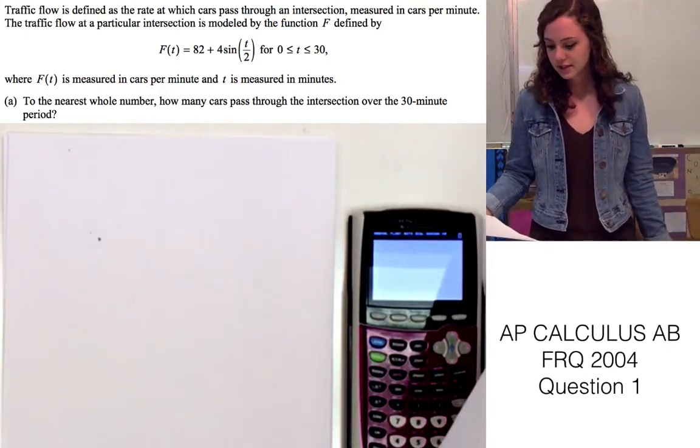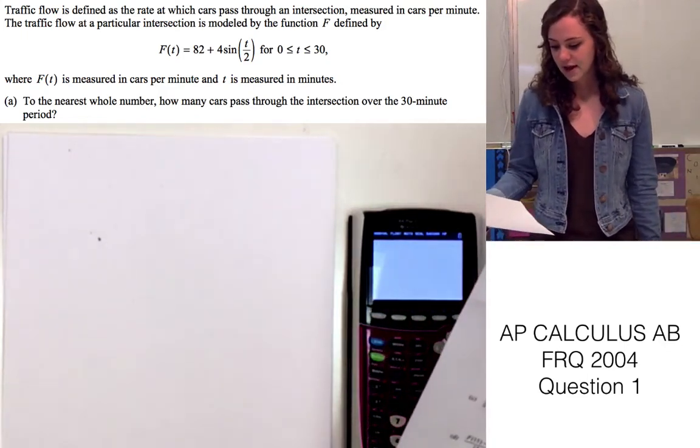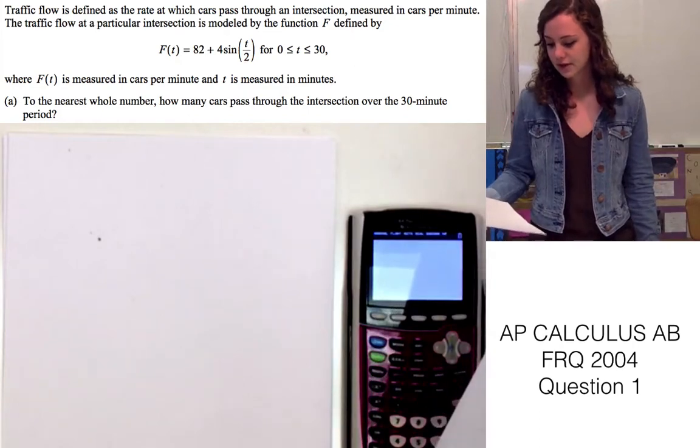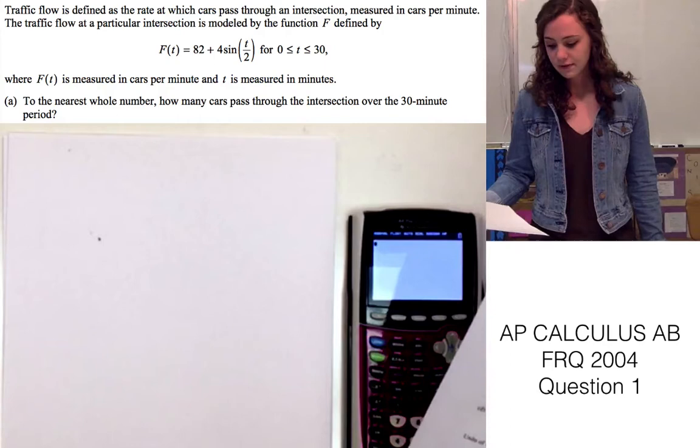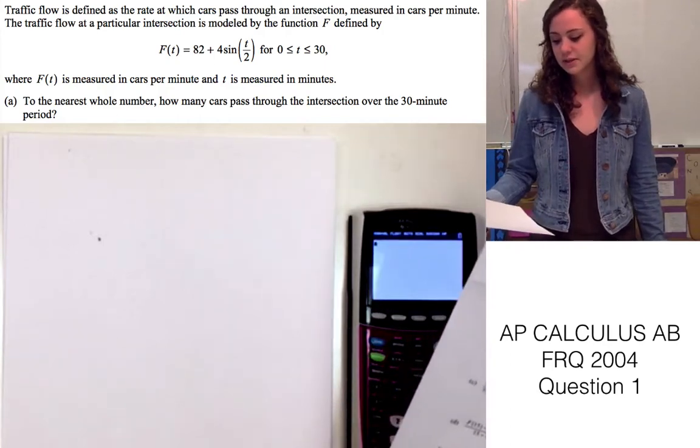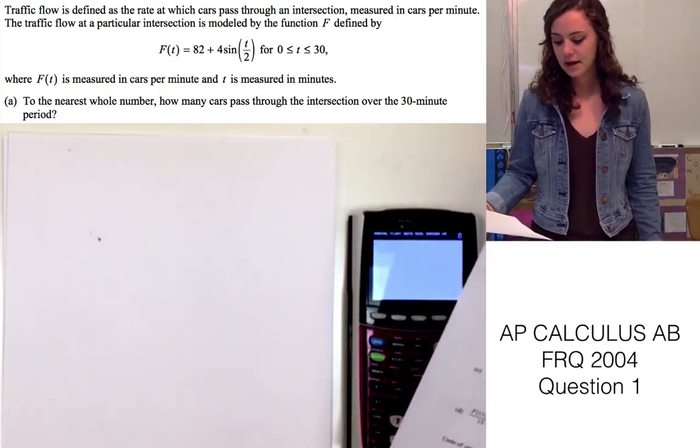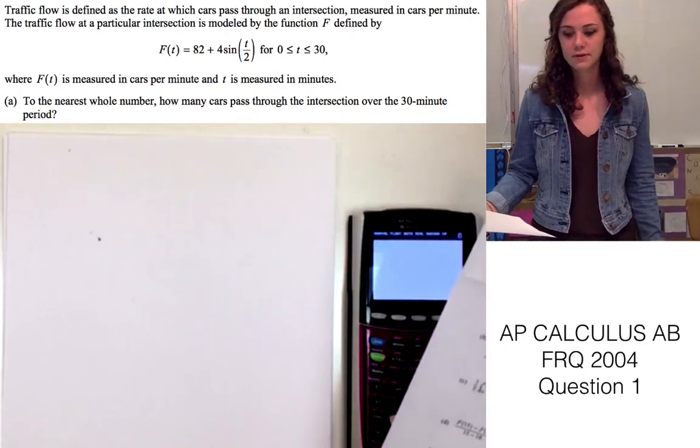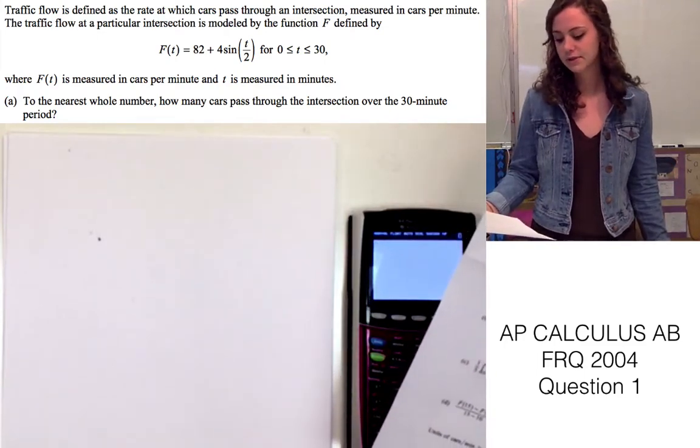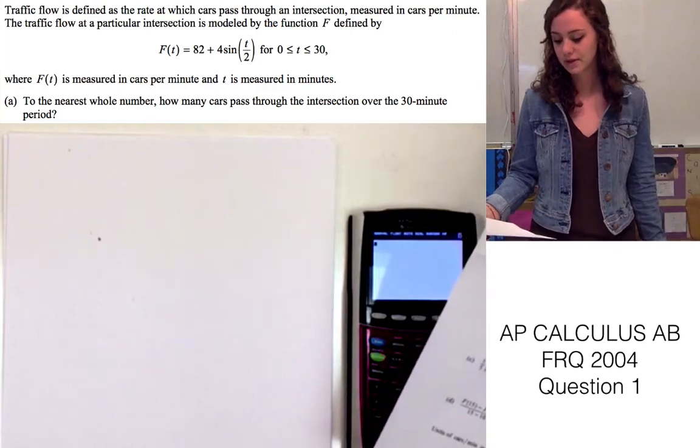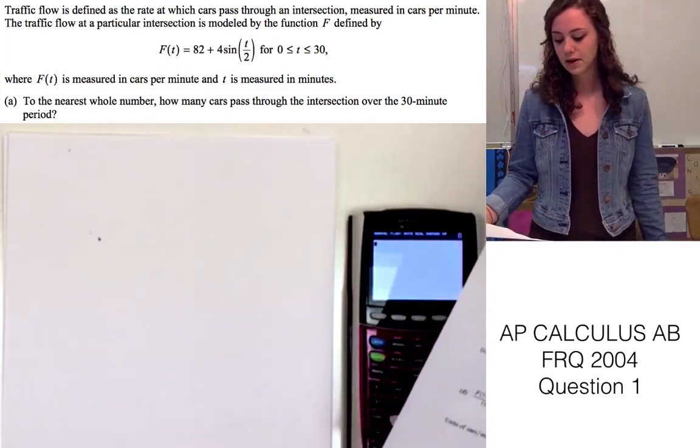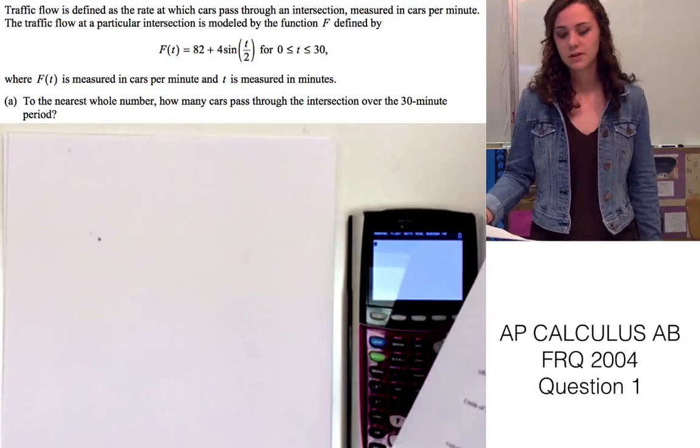So this question says, traffic flow is defined as the rate at which cars pass through an intersection, measured in cars per minute. The traffic flow at a particular intersection is modeled by the function f, defined by f(t) = 82 + 4sin(t/2), for 0 ≤ t ≤ 30, where f(t) is measured in cars per minute, and t is measured in minutes.